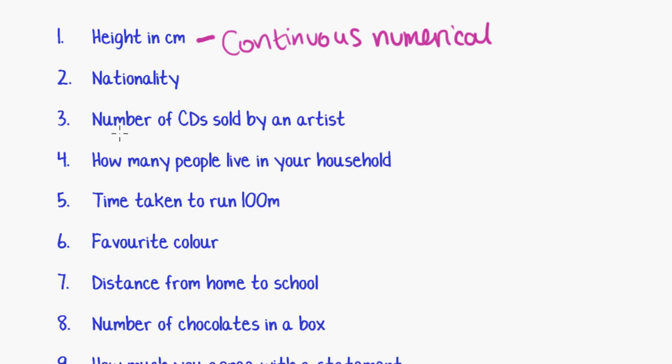Nationality. Okay, so what responses could you give to that if you were asked that in a survey? You might say Australian, you might say New Zealand, you might say British, you might say American, Fijian, Italian. And those are all word answers, which makes this one categorical.